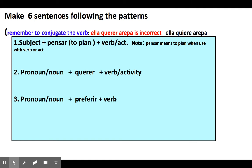In here we have the formula: subject plus pensar. We can use a pronoun or a noun as the subject. If you're using yo, you need to conjugate it with yo — remember to conjugate the verb. For example, if we have querer in the formula, that is the verb in its infinitive form. But you need to conjugate the verb when you're making sentences. So ella querer arepa is incorrect.